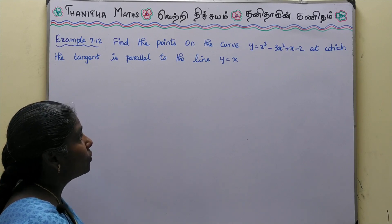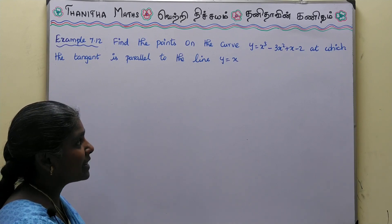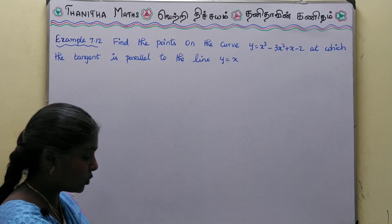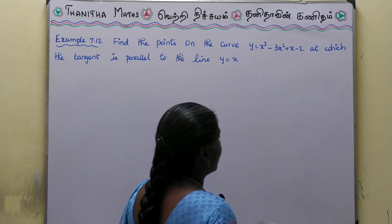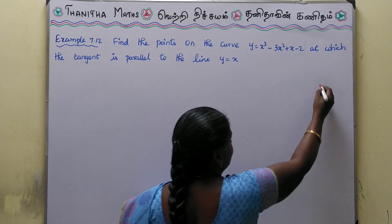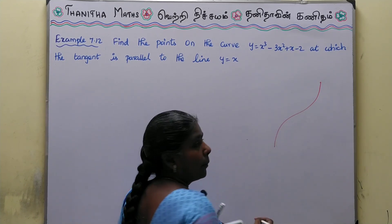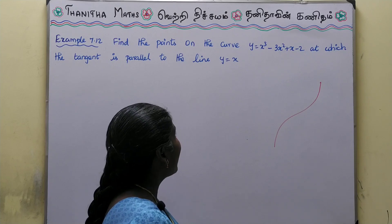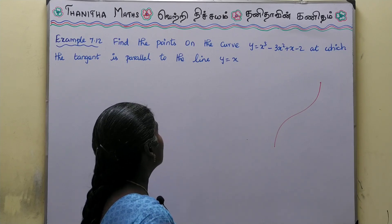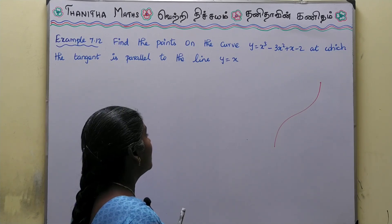Now we will talk about the curve y = x³ - 3x² + x - 2. So, this is an x-cube curve, and we will talk about the shape of this curve. In this curve, there is a tangent parallel line.